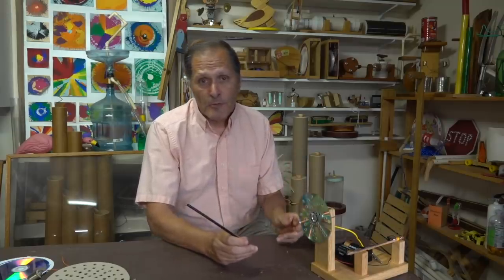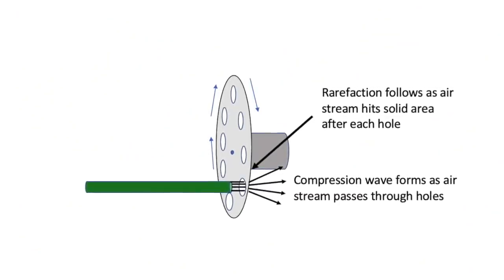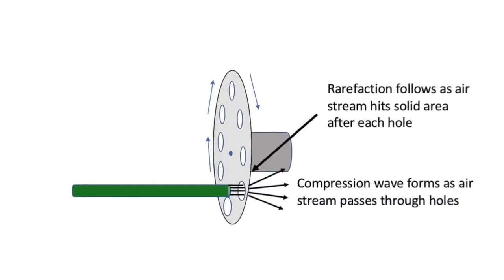We know that sound travels as a compressional wave, and a compressional wave is caused by some type of vibration or disturbance. In this case, the compressional wave forms every time the airstream passes through one of the holes.